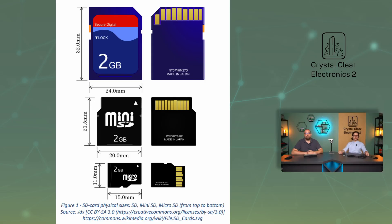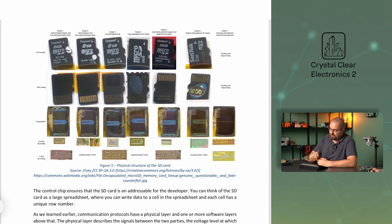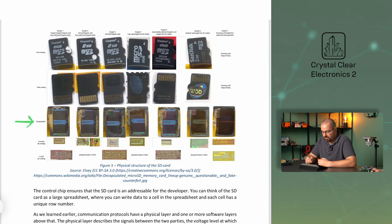The acronym SD comes from the term Secure Digital. There are currently three physical sizes in use, known in descending order as SD, mini-SD, and micro-SD. At first glance, an SD card might look like a piece of plastic, but as you can also see in the picture, we are actually talking about a silicon-based flash memory chip with a control chip and tiny wires hidden underneath the plastic. The control chip ensures that the SD card is an addressable memory for the developer.